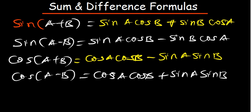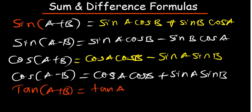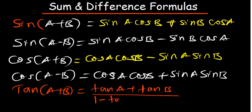What if we have tan A plus B? This is going to be tan A plus tan B, divided by 1 minus tan A times tan B.